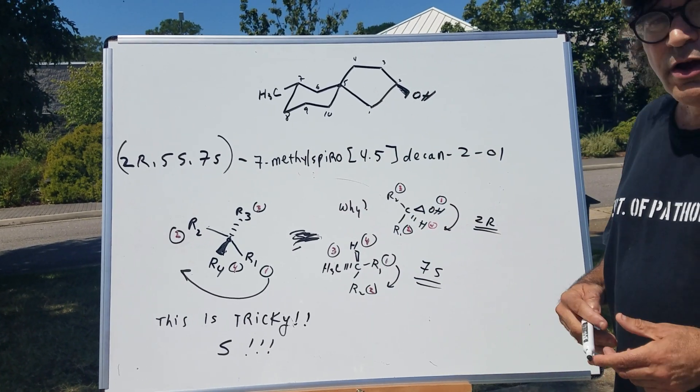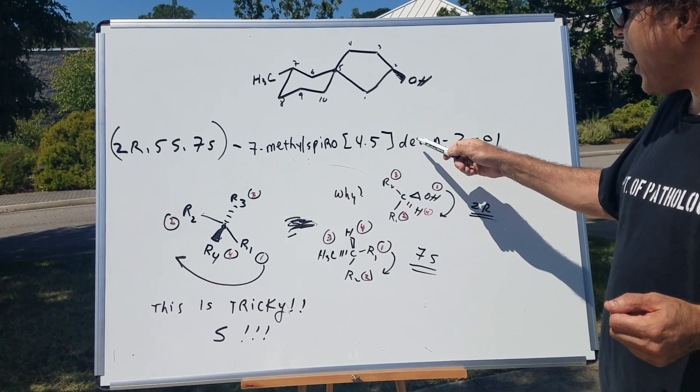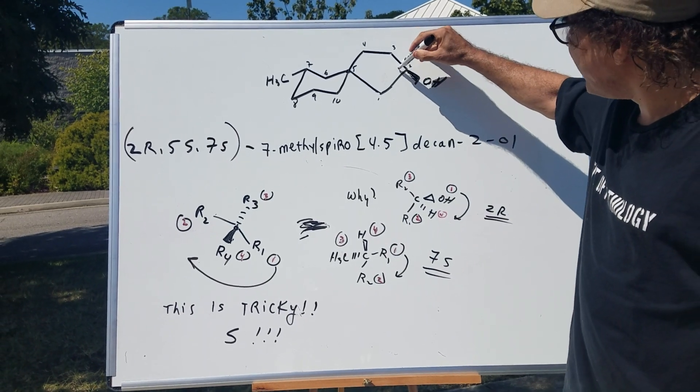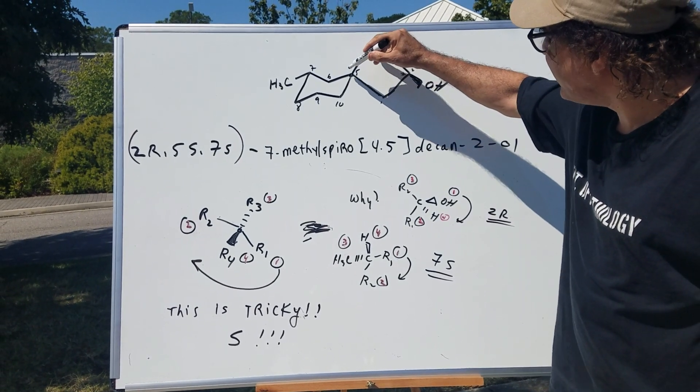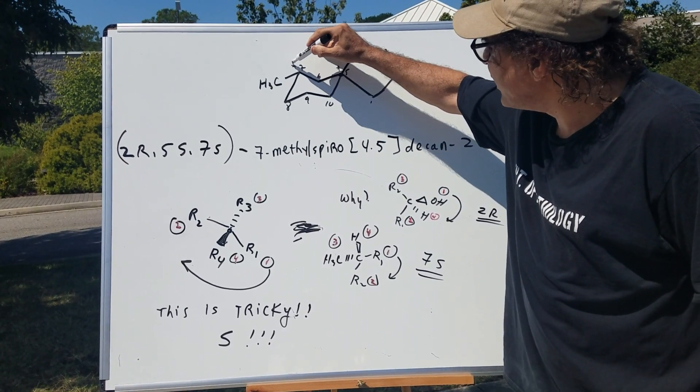So putting it together, we get 7-methyl, spiro, 4, 5, decan, 2-ol. Now, here's the hard part. But there's actually 3 chiral centers. There's 1 here. That's the 1 most people would miss, 2, and there's 3.